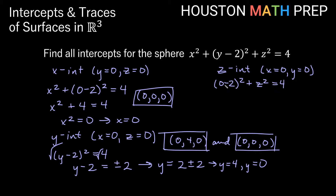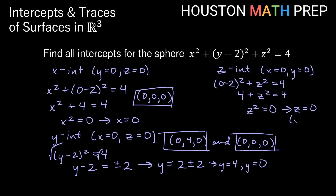This negative 2 squared again becomes 4, so we get 4 plus z squared is equal to 4. Subtracting 4 from both sides gives us z squared is equal to 0, which tells us z is equal to 0. So with x, y, and z all equal to 0, the only place where our sphere intersects the z-axis is at the origin (0, 0, 0).